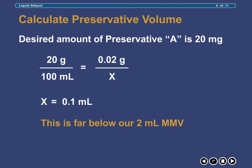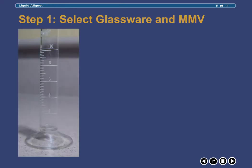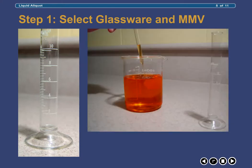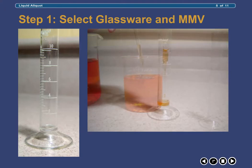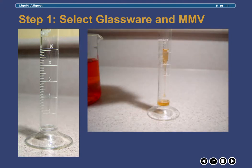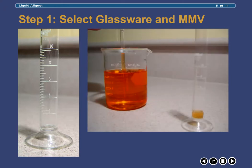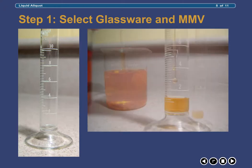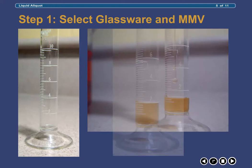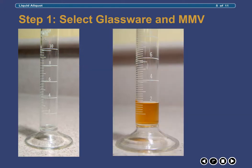Therefore, in order to obtain the 20 milligrams of preservative that we desire, we must perform a liquid-liquid aliquot. Our first step is to select our glassware and then select a volume of Preservative A to measure that is equal to or above the minimum measurable volume of the glassware we have selected. Here, we choose to use the 10 milliliter graduated cylinder and to measure 2 milliliters as our minimum measurable volume, which is equal to the published minimum measurable volume for this cylinder.